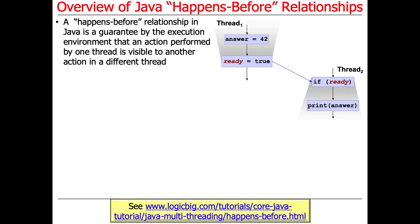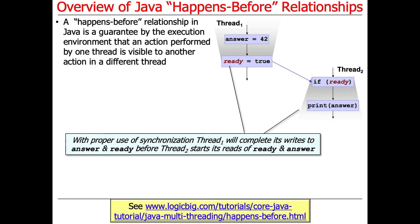What a happens-before relationship in Java and Java's memory model is a guarantee by the Java runtime system, the execution environment, the virtual machine, the Android runtime or whatever, that an action performed by one thread will be properly visible to another action running in a different thread in the right order. So it goes back to this consistency and ordering concept we've talked about. Here's an example of what you want to have happen.